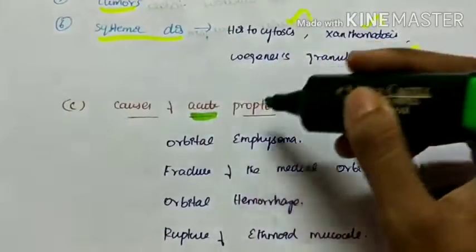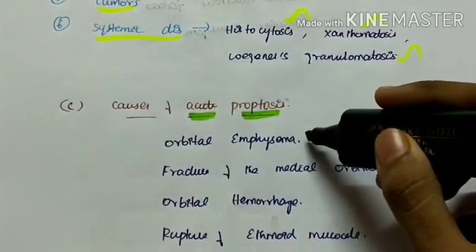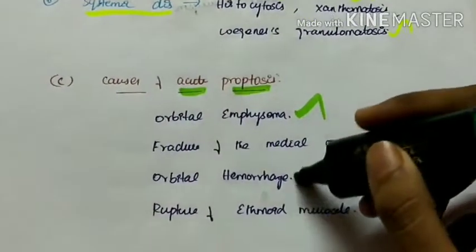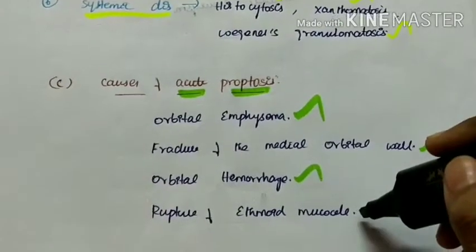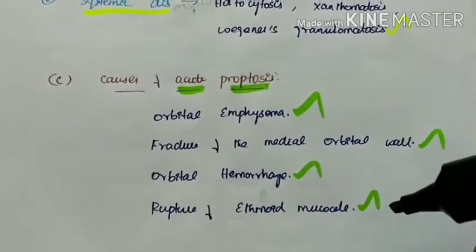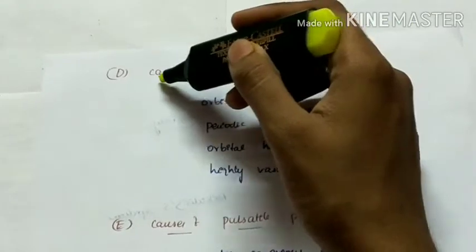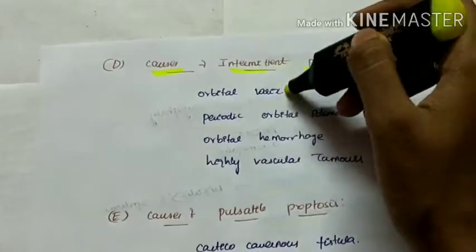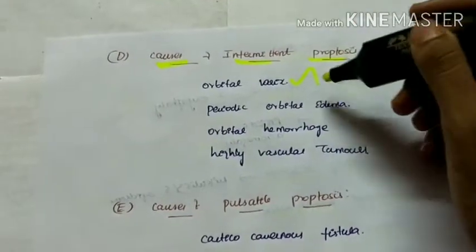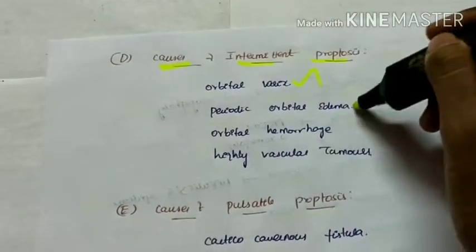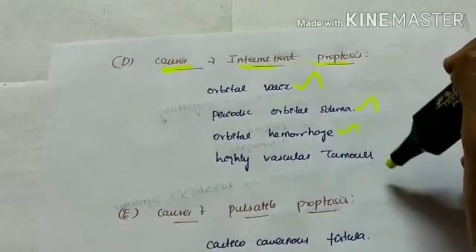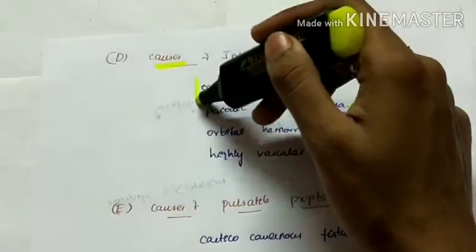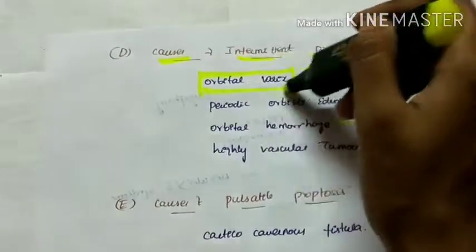Causes of acute proptosis include orbital emphysema, fracture of the medial orbital wall, orbital hemorrhage, and rupture of ethmoidal mucocele. Causes of intermittent proptosis include orbital varices, which is a venous disorder, periodic orbital edema, orbital hemorrhage, and highly vascular tumours — the most important cause being orbital varices.